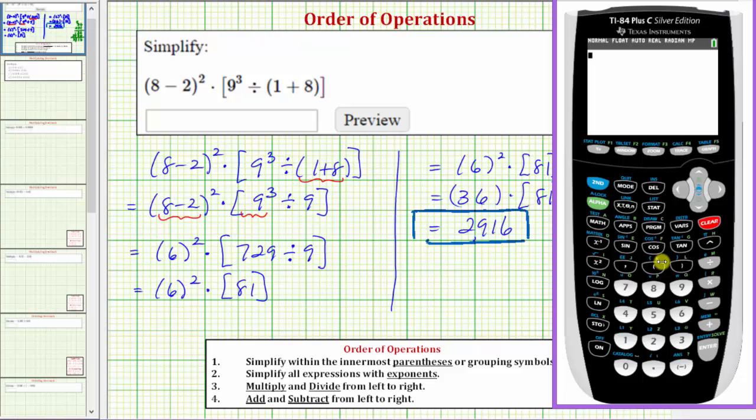So enter the given expression as we see here, except instead of brackets we'll use parentheses. So we have open parenthesis eight minus two, closed parenthesis, squared, times open parenthesis, nine raised to the third power or nine cubed, right arrow, divided by open parenthesis one plus eight, closed parenthesis, and another closed parenthesis. And enter. And notice how we do get the same result.